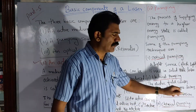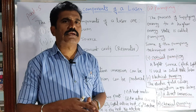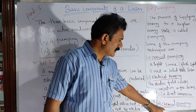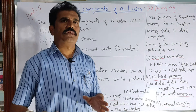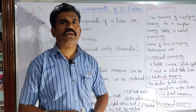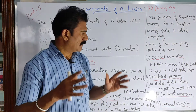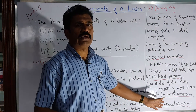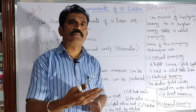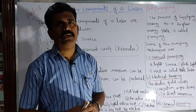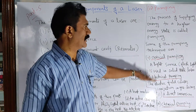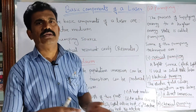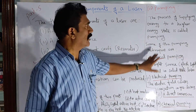The third pumping technique is direct conversion, in which electrical energy is directly converted to light energy. The last one is chemical pumping — in some media, a chemical reaction takes place, and that chemical reaction also excites the atoms and molecules. By one of these methods we need to excite the atoms to achieve population inversion between the two energy levels. Depending upon the mechanism, we call them optical pumping, electrical pumping, direct conversion, or chemical pumping.